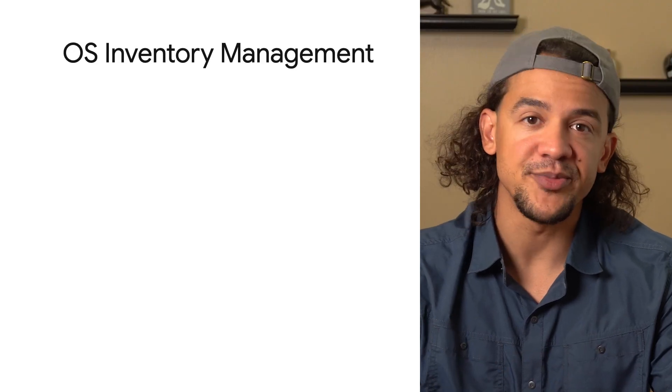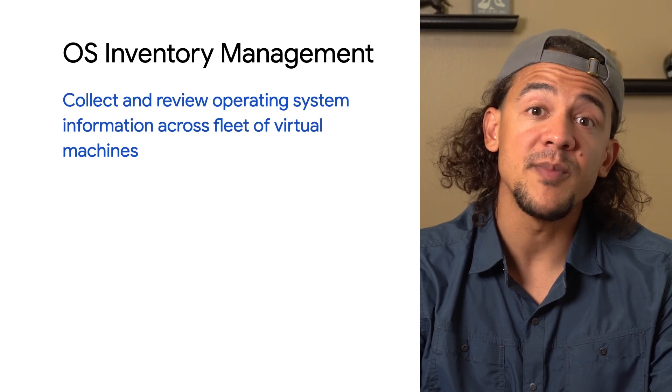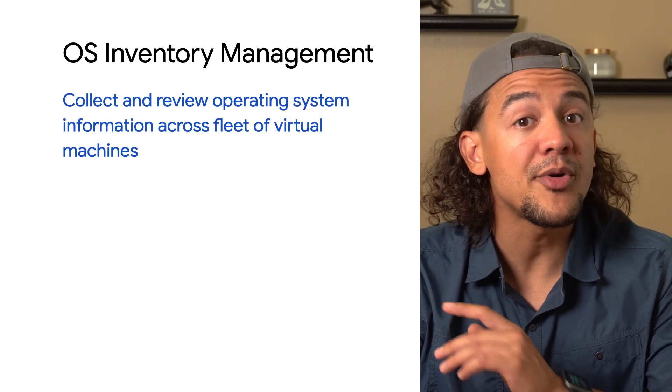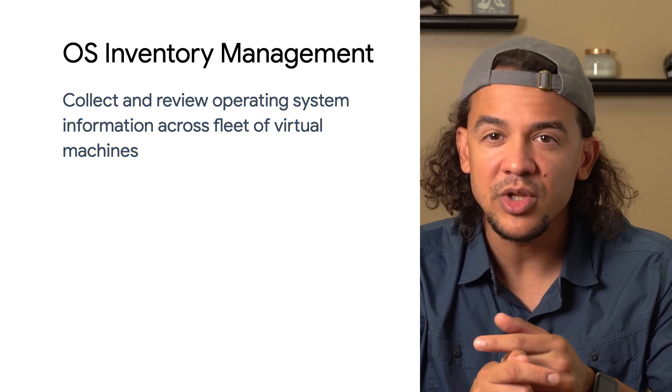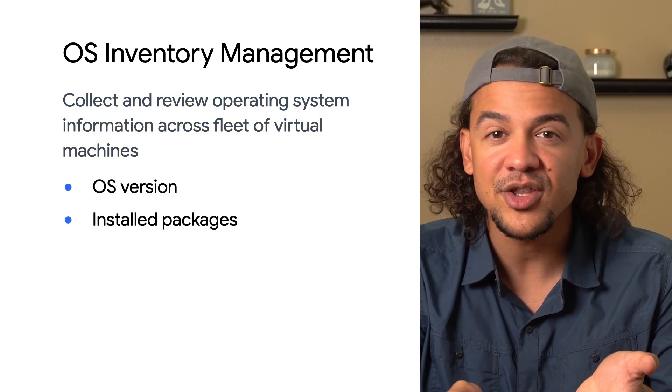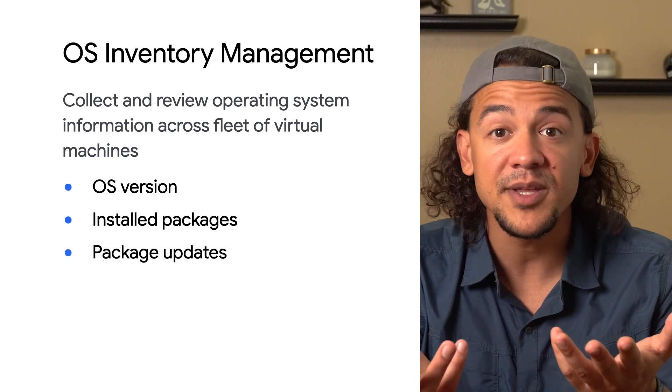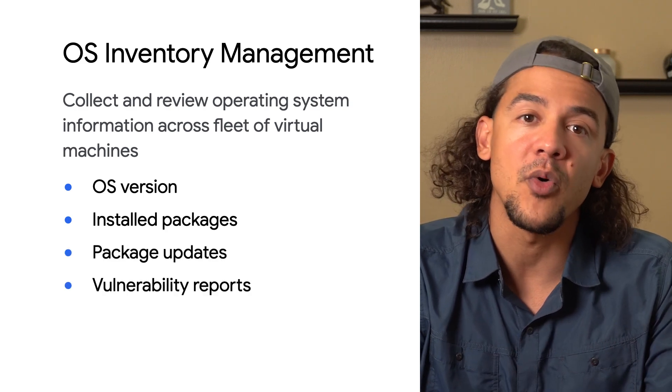Let's talk about the first VM Manager feature: OS inventory management. OS inventory management lets you collect and review operating system information from your fleet of VMs. This information includes operating system version, packages installed on each VM, package updates available, and vulnerability reports. The OS config agent that periodically reports in the latest data interfaces with standard package managers like apt, yum, and guget to collect info on packages and updates.